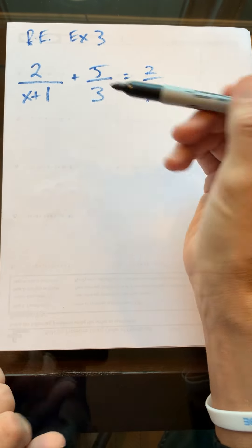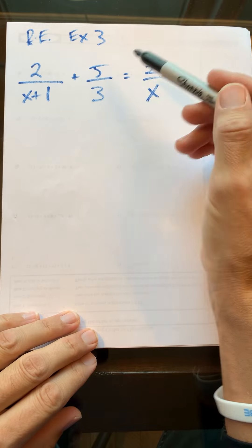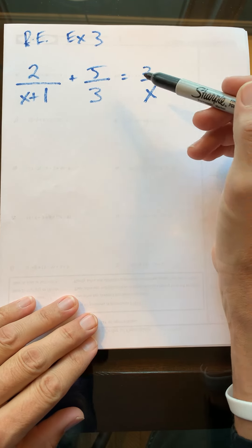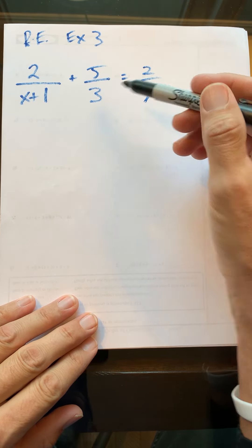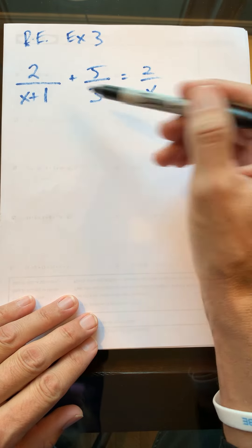Okay, rational expressions example number three: 2/(x+1) + 5/3 = 2/x. The challenge with this one with the three different terms is that it's kind of tricky to cross multiply.